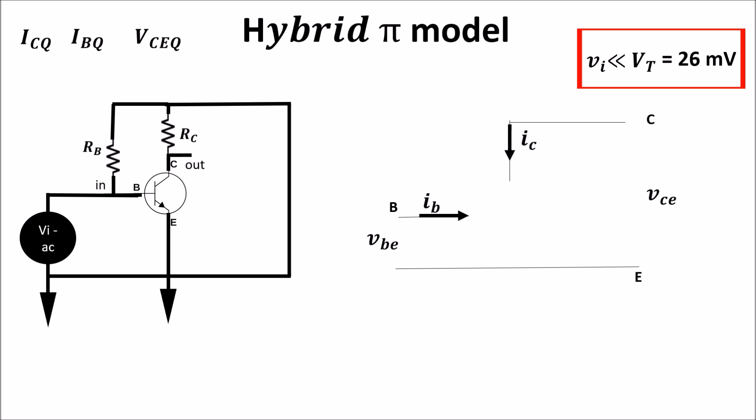First we know that in the BJT the IC current is related to the VBE voltage, so between collector and emitter we put a current source dependent on VBE through a constant called transconductance. Because it has the conductance dimension but it relates a voltage in a junction to a current in another junction, so a transconductance. The relation between VBE and IC is linear because of the small signal hypothesis. We see it better later on.